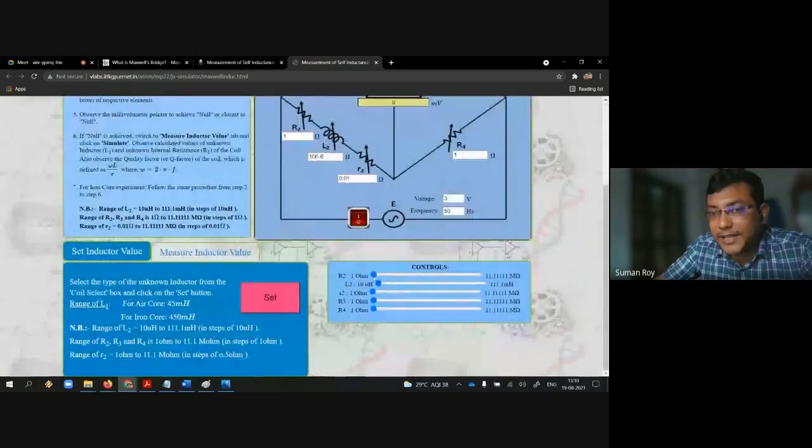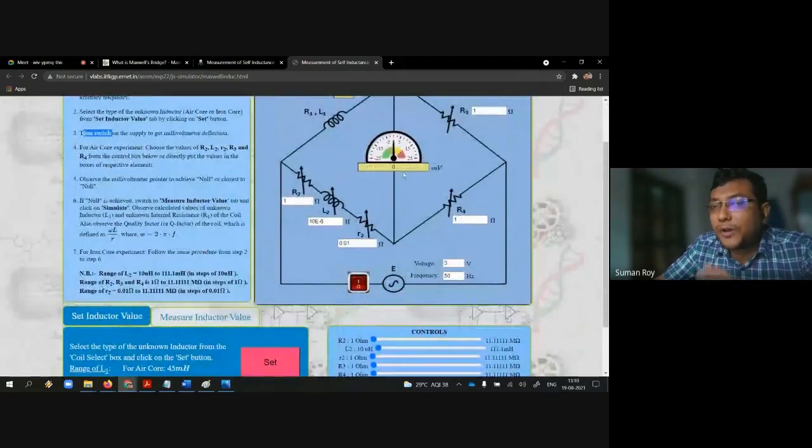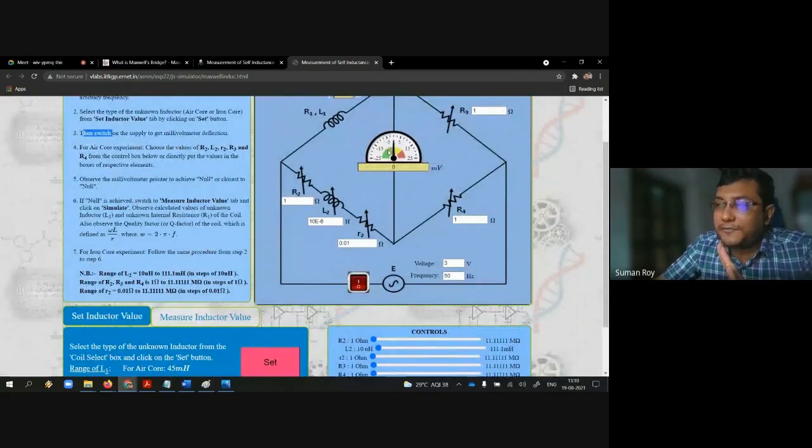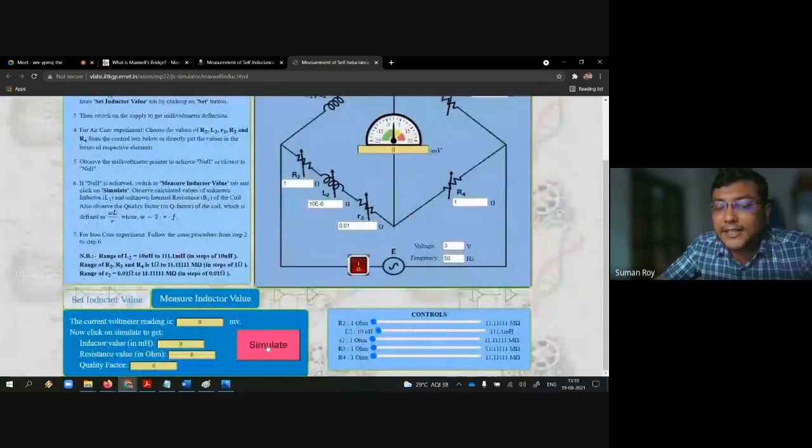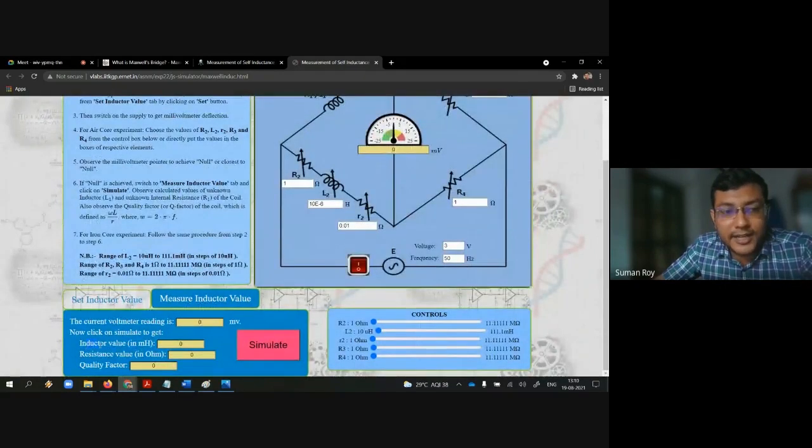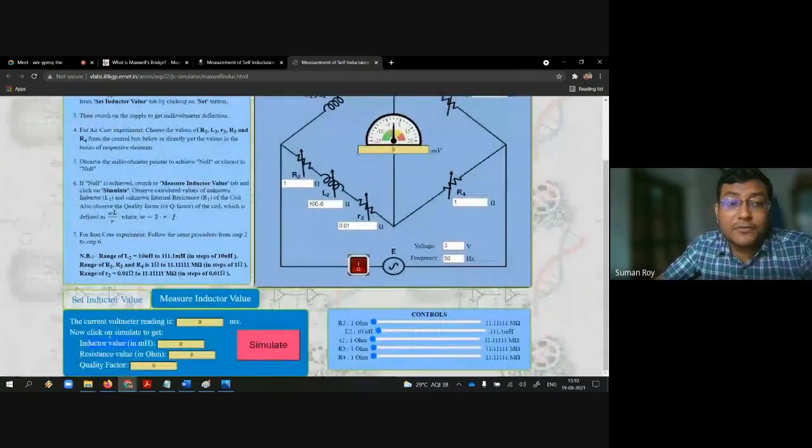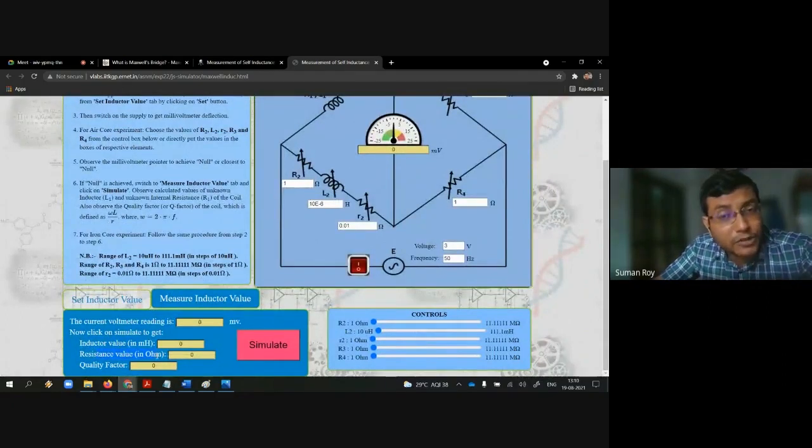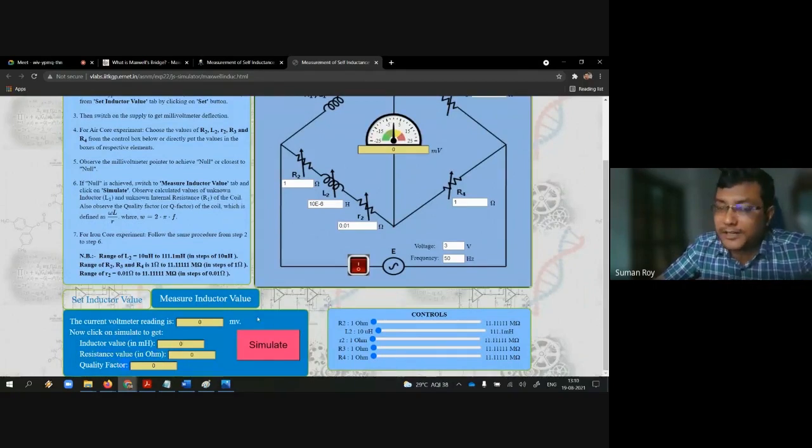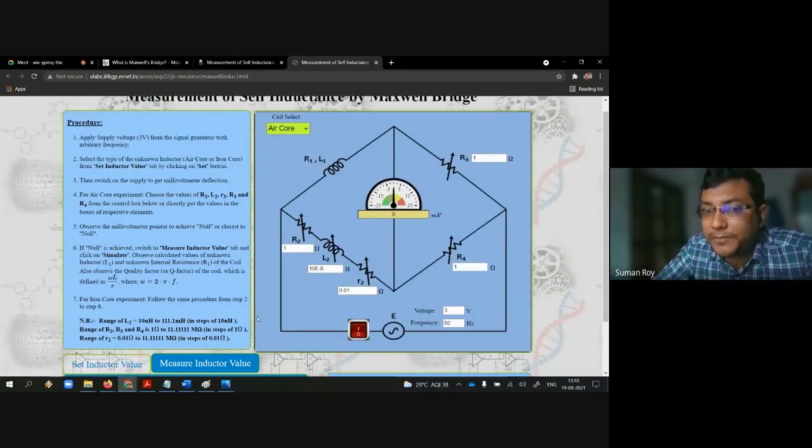By sliding these switches, your objective is to get the null deflection. Once you got the null deflection, click on measure inductor value and then click simulate. It will calculate the inductor value, which is expected to be 45 Henry, and the resistance value, which is expected to be near about 40 ohm. Quality factor will also be calculated. That is the objective of this experiment.